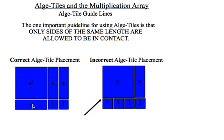And a quick example of that, x can contact an x squared along the same or shared side length, whereas a 1 can never touch an x squared term because it does not have any of the shared side lengths.